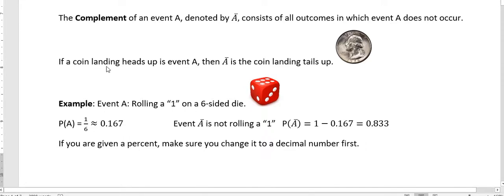So if a coin landing heads-up is event A, then the complement of A is the coin landing tails-up. So a complement is anything that's happening that's outside of our initial event.